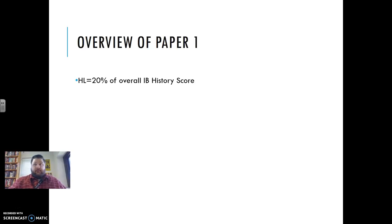So, if you are HL Paper 1, just a quick overview is 20% of your overall IB score. For SL, it is 30% of your overall score.